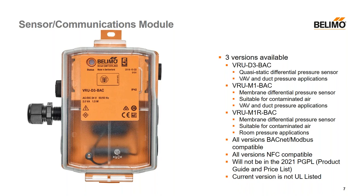Finally, we have the VRU-M1R-VAC, which also uses a membrane differential pressure sensor — actually the same sensor as the M1 — except it has been calibrated to plus or minus 75 Pascals. That makes it suitable for room pressure applications. If you're trying to create slightly positive or slightly negative pressure, this sensor will control much better than any of the others in that range.